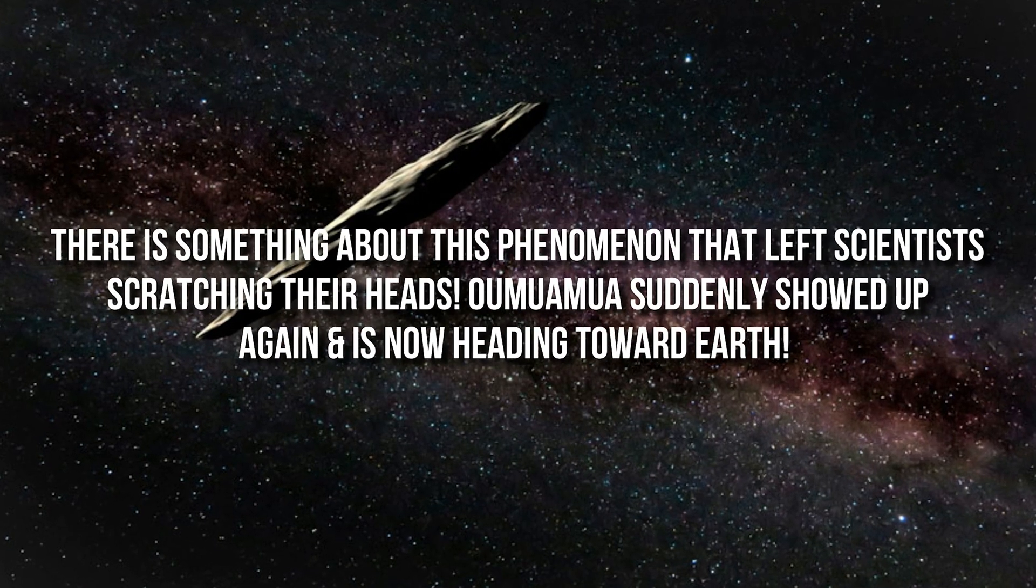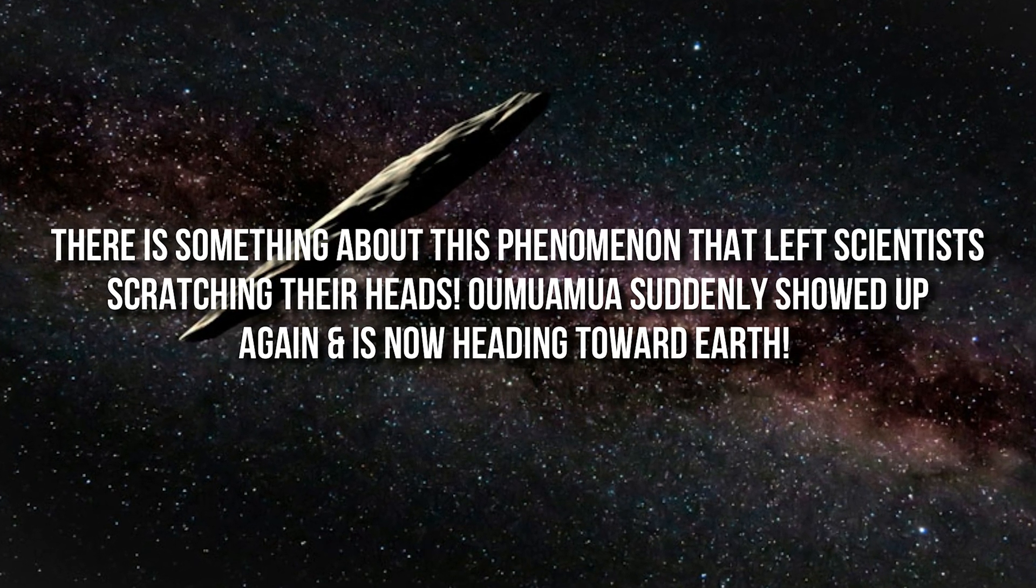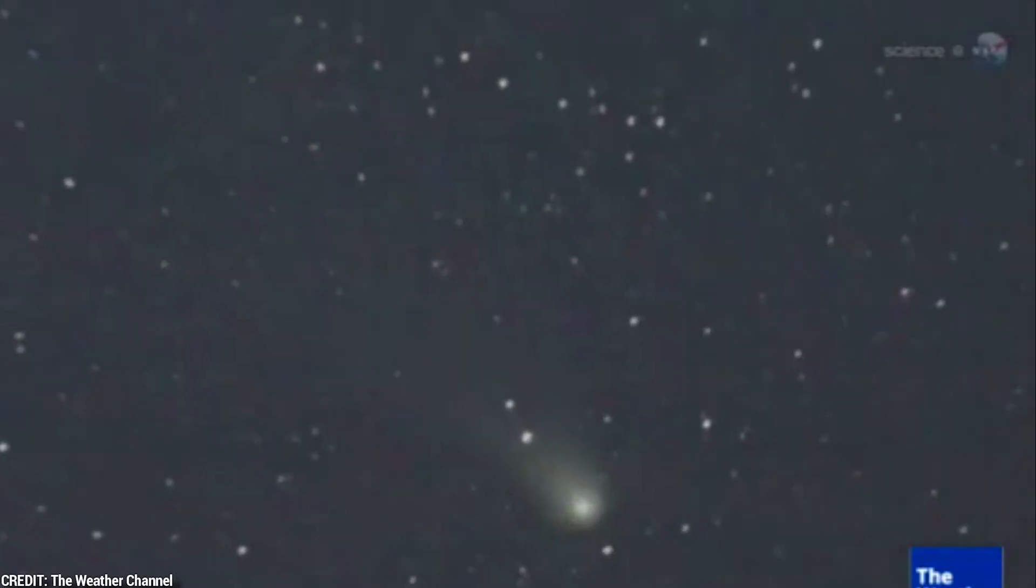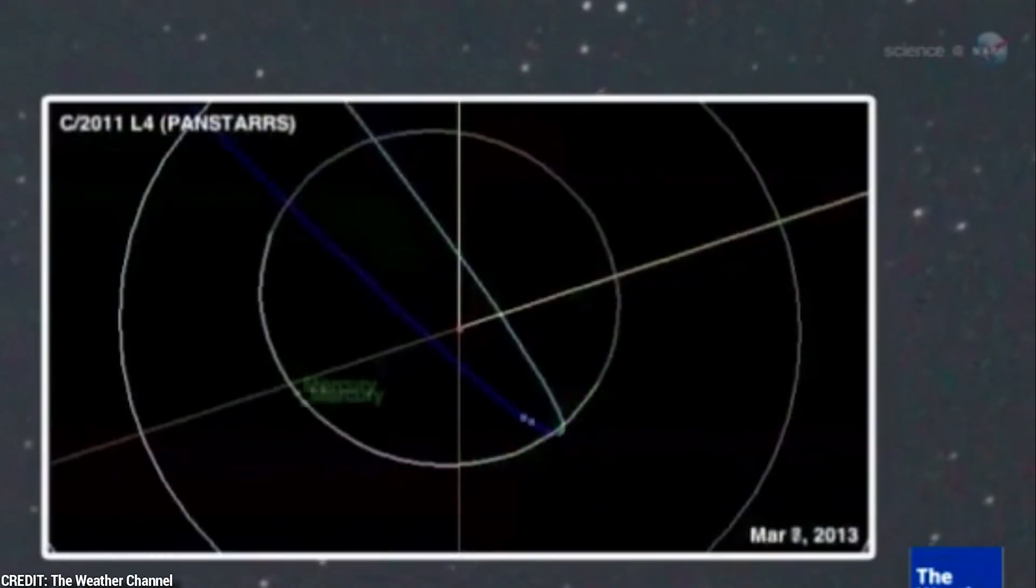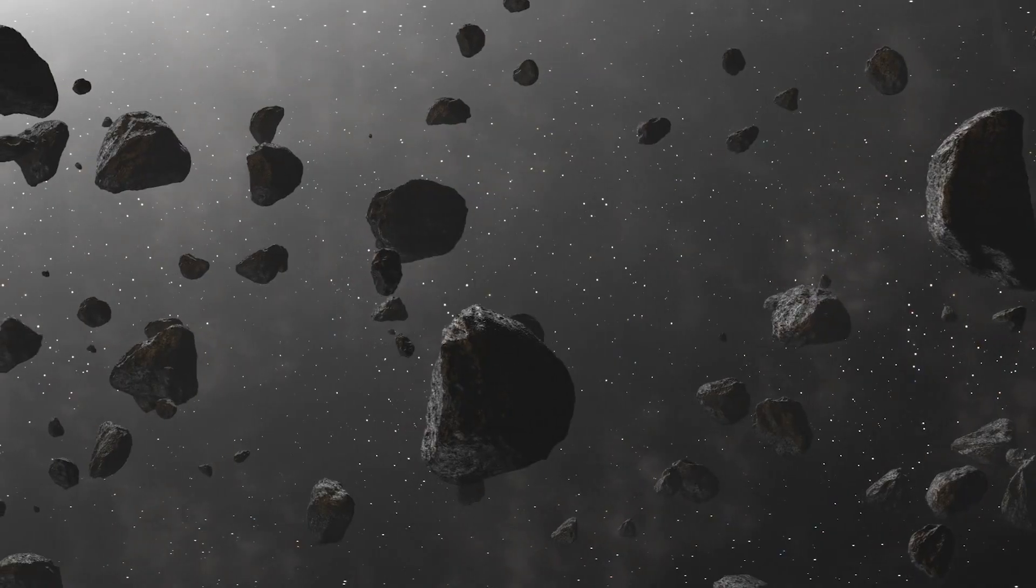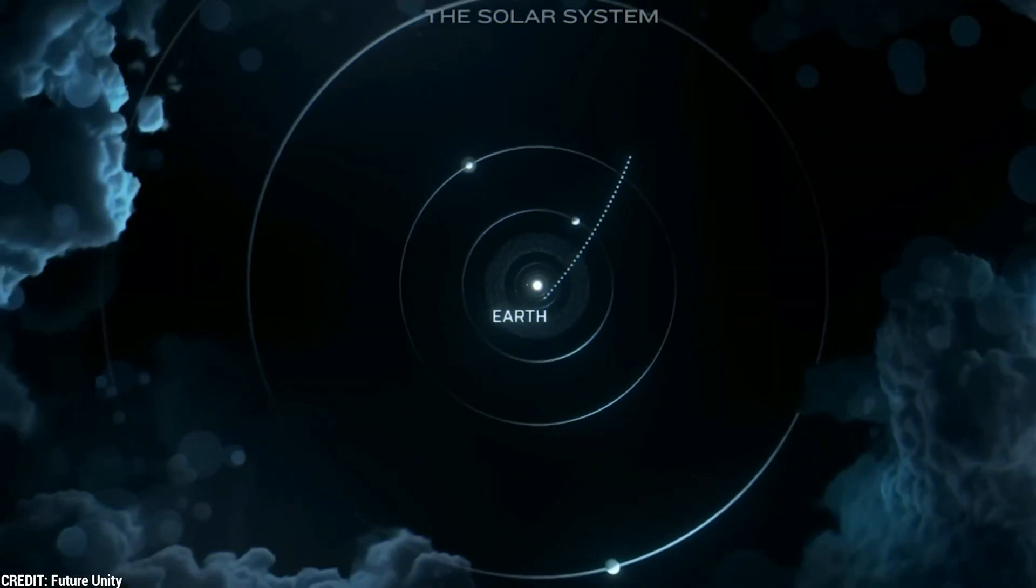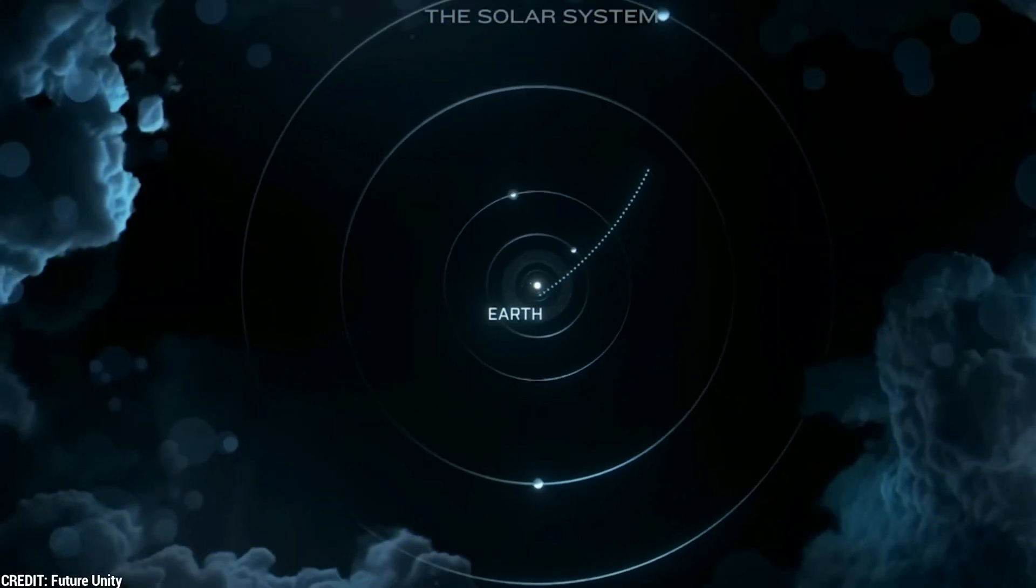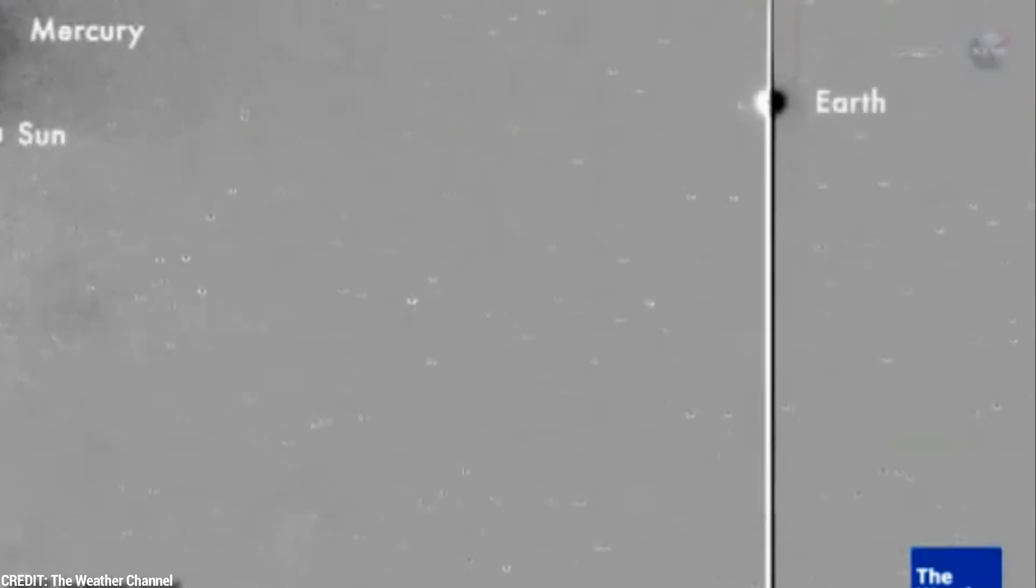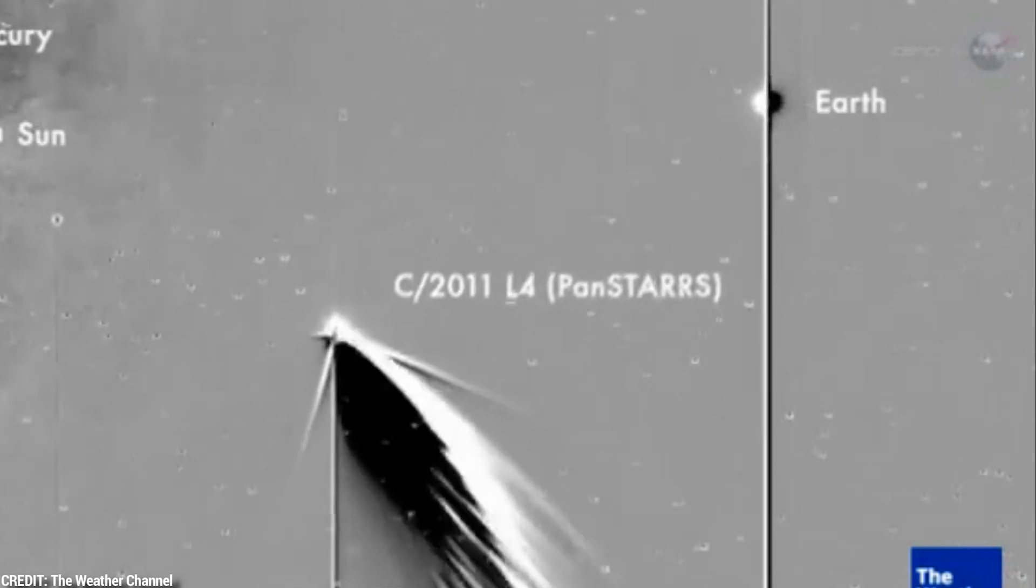There is something about this phenomenon that left scientists scratching their heads. Oumuamua suddenly showed up again and is now heading toward Earth. What puzzled scientists was that Oumuamua didn't fit neatly into existing scenarios. While it exhibited similarities to asteroids which typically moved due to gravitational forces, it accelerated as it traveled. This acceleration indicated the presence of a force beyond gravity. The object seemed to experience a pushing effect akin to comets propelled by the evaporation of gas and dust near the Sun.